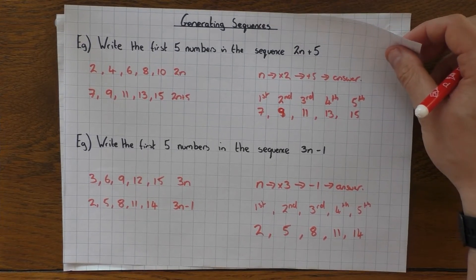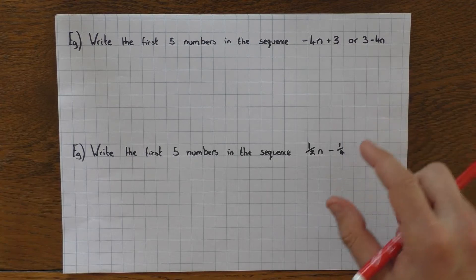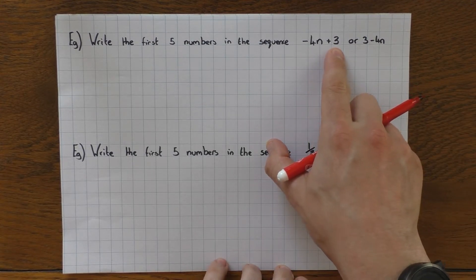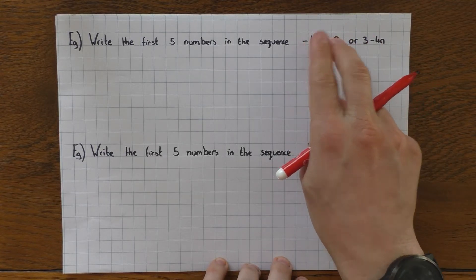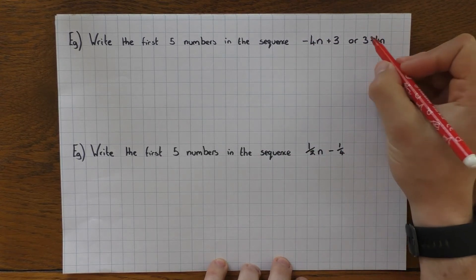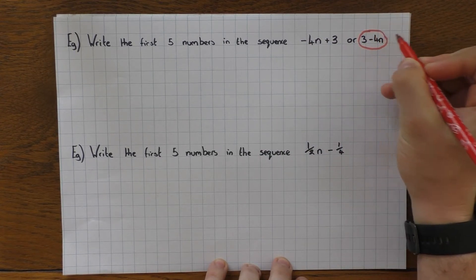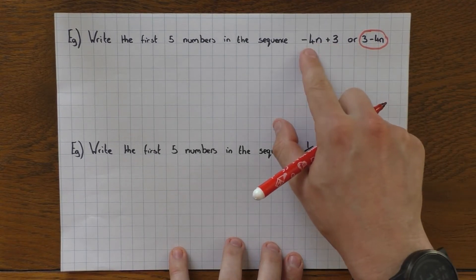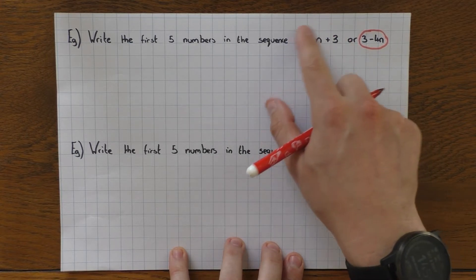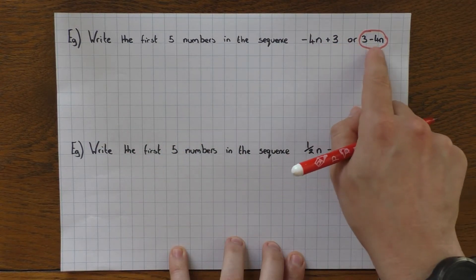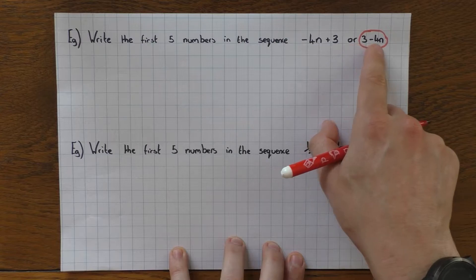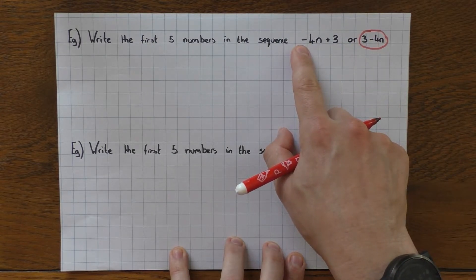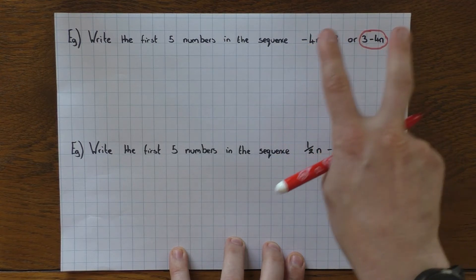So let's have a look at something a bit trickier. This one here is minus 4n plus 3. It might be written like this: 3 minus 4n. These are exactly the same thing, it's just switched the other way around. In the exam, it's likely to be written like this. What I recommend is to switch it around to have the minus 4n plus 3. Just a quick heads up, those are exactly the same thing — we tend to write it this way because it looks a bit neater.